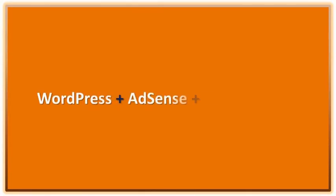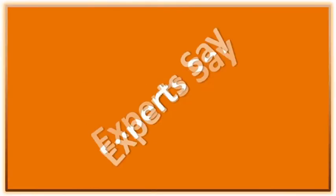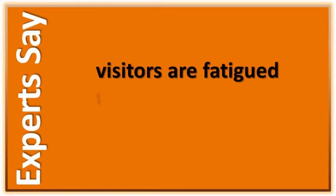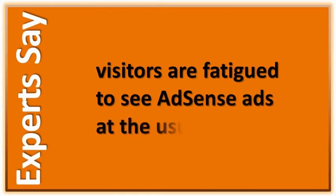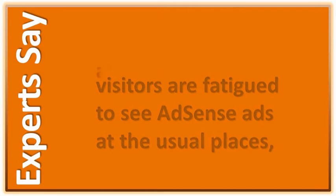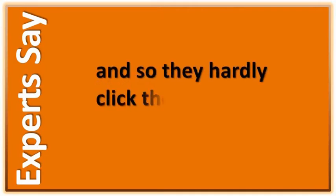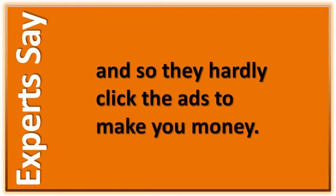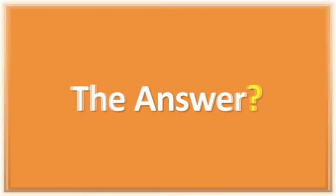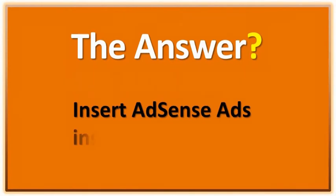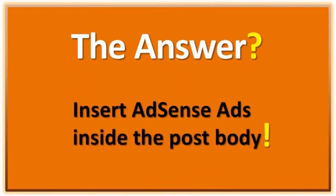So, if you have a WordPress blog and you also use AdSense to earn some income, you may benefit by using two tips I am going to tell you. Experts who are using AdSense for a long time say that visitors have developed fatigue at seeing AdSense ads in the usual places like in the beginning and in the end of a post. They simply skip looking at them, let alone clicking them to make money for you. The answer to this is to insert an AdSense ad inside the blog post where they are least expected, and that increases the click-through rate.